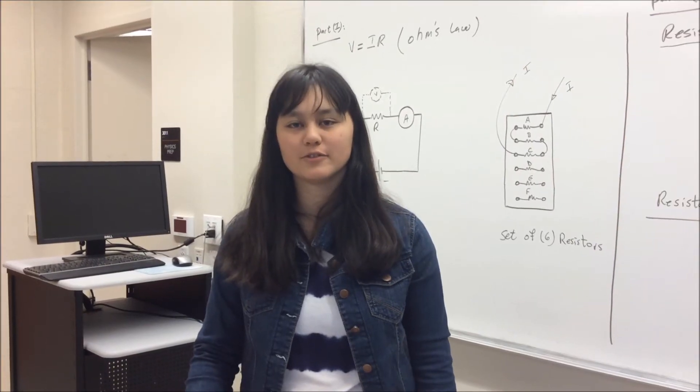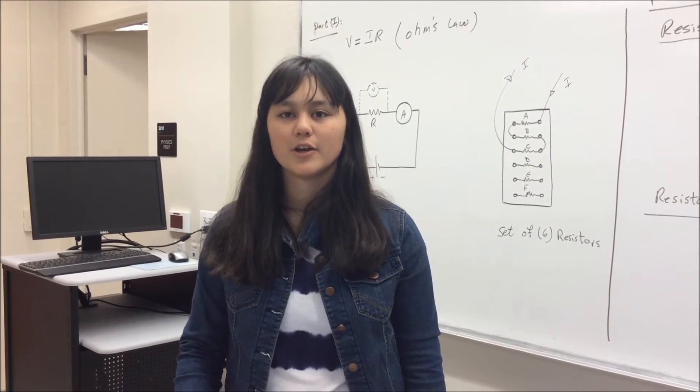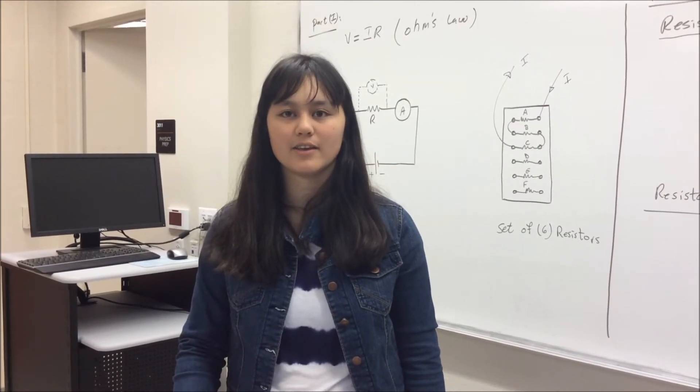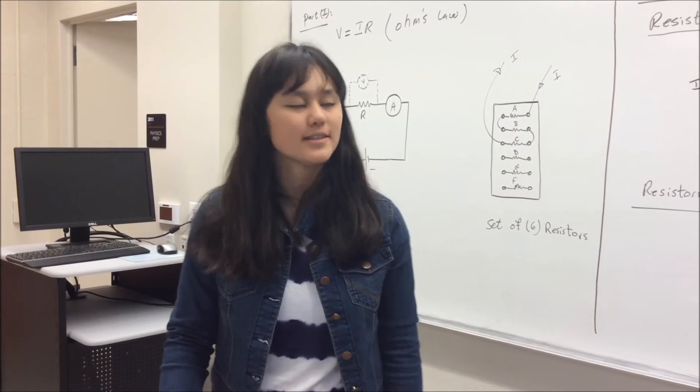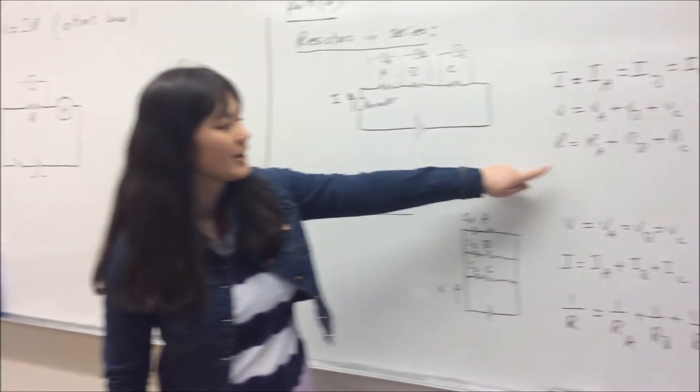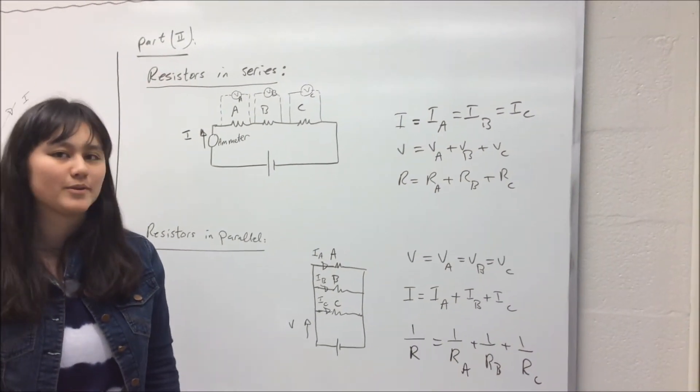So after you've recorded the measured values, you're going to find the calculated values of I, VA, VB, and VC using these equations right here. And then you're going to find the percentage error.